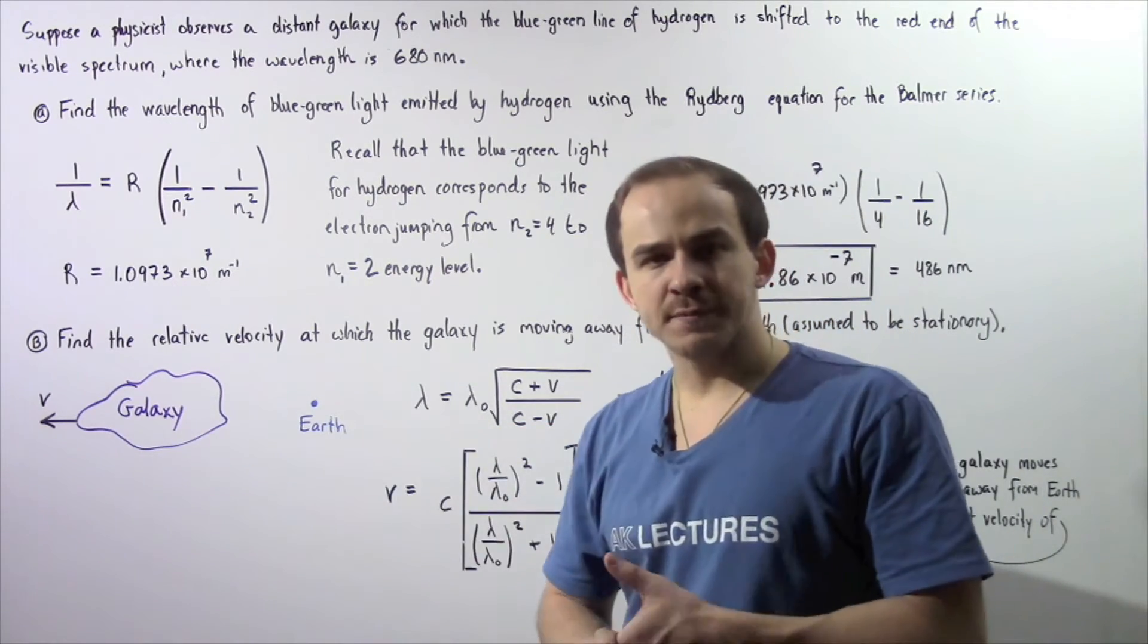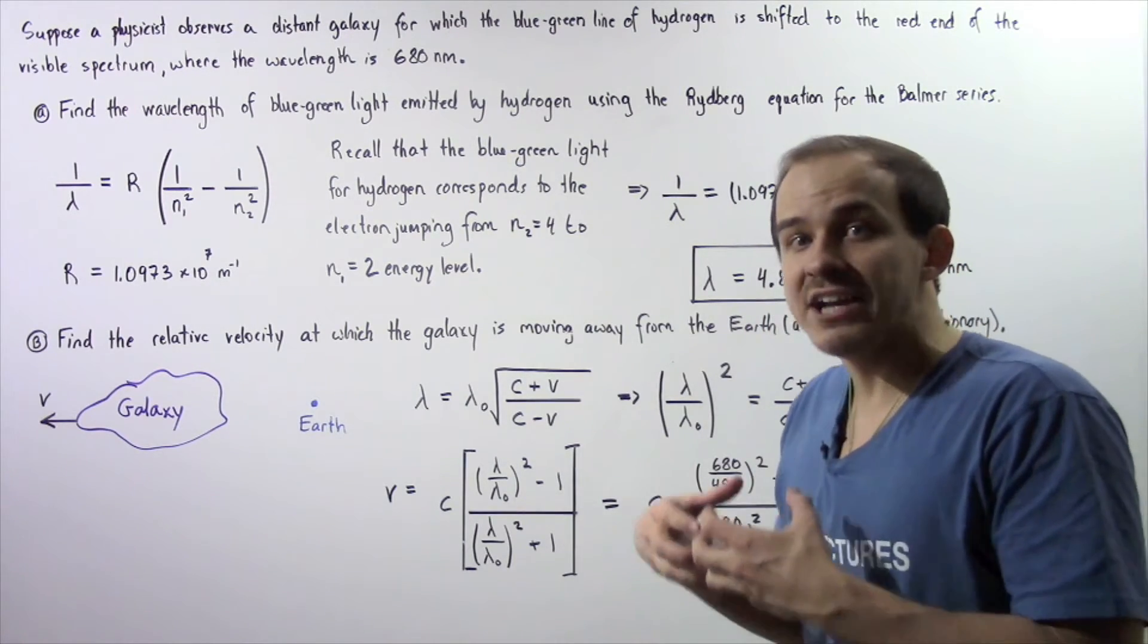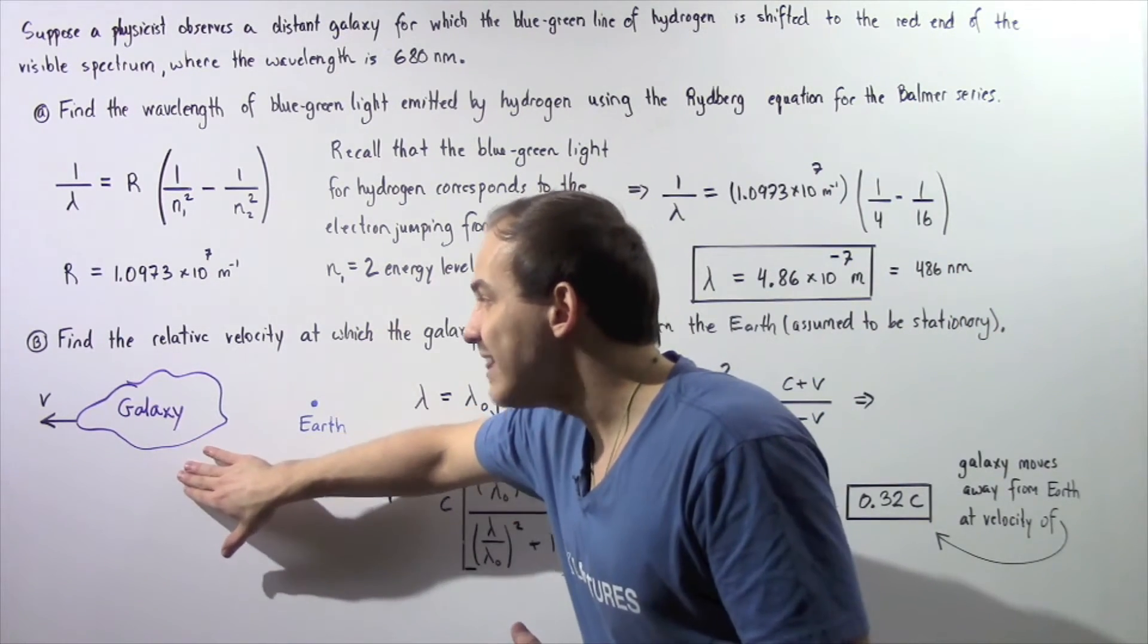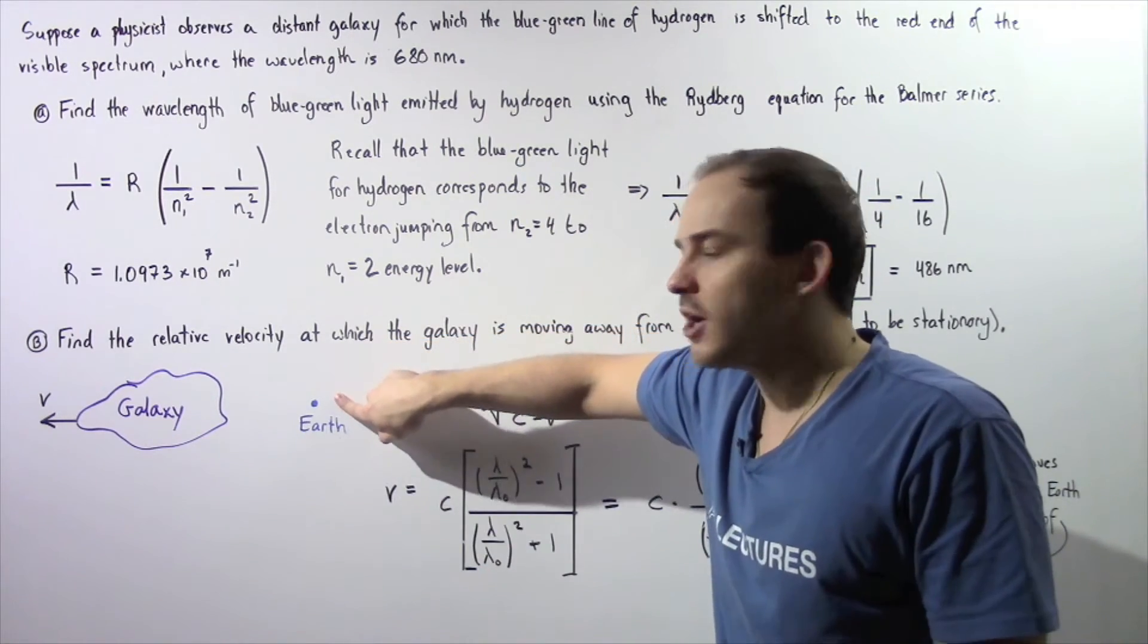Now let's move on to part B. We want to find the relative velocity at which the distant galaxy is moving away from the stationary Earth.